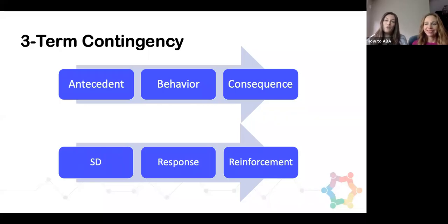So we've talked about the three-term contingency. These are the basic building blocks of ABA, sometimes referred to as ABC, sometimes referred to as SRS, and both of them are referring to the same thing.